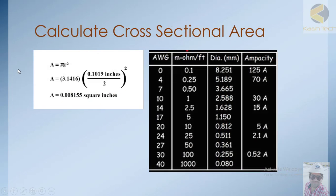The cross-sectional area can be calculated using the formula A = πr², where r is the radius. For example, if the diameter is 0.1019 inches, dividing by 2 gives the radius, and the calculated area comes out to 0.08155 square inches.